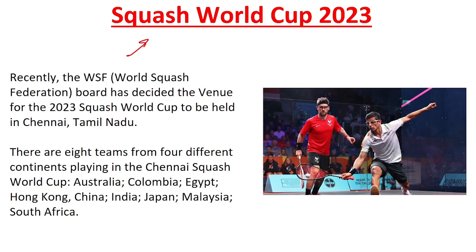The competing countries in this World Cup are Australia, Colombia, Egypt, Hong Kong, China, India, Japan, Malaysia, and South Africa. This competition will be seen in Chennai.